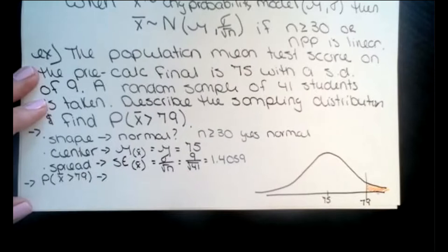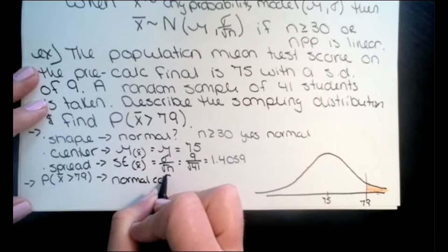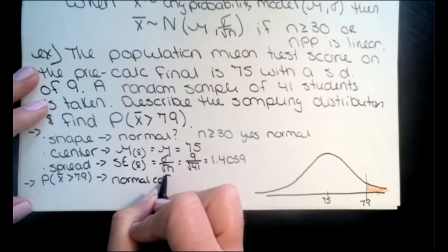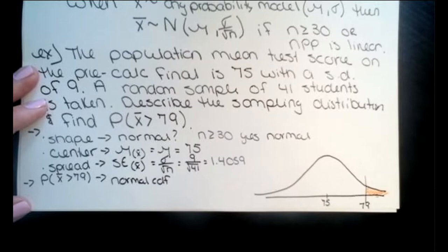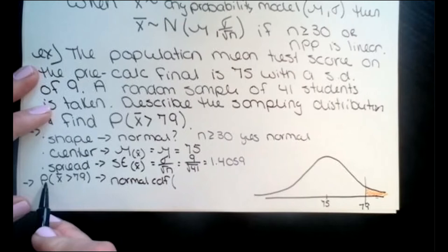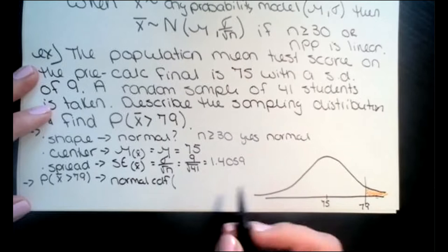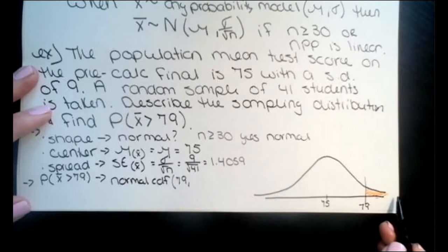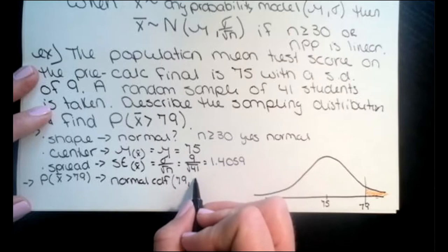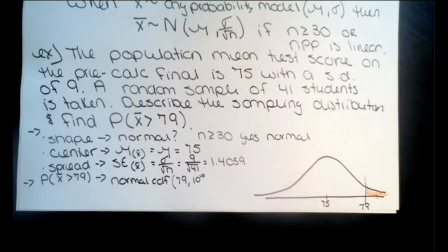For my calculator, this is what I mean by 'show work': type out normal CDF and what you're plugging in. You need four values: lower bound is 79, upper bound is 10 to the power of 10 — something really large, since the calculator doesn't understand context. My calculator doesn't have infinity, so I use 10 to the 10th power. Then my center is 75 and my spread is 1.4059.